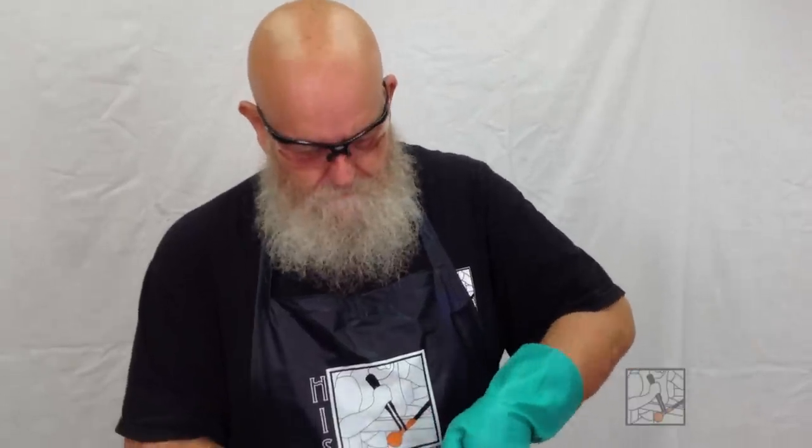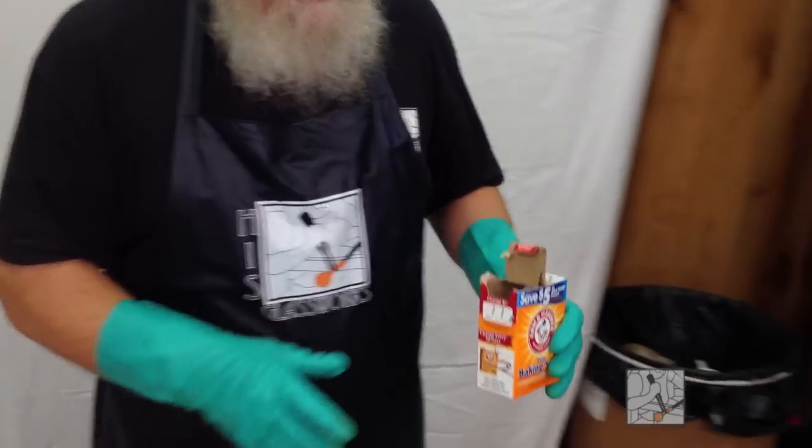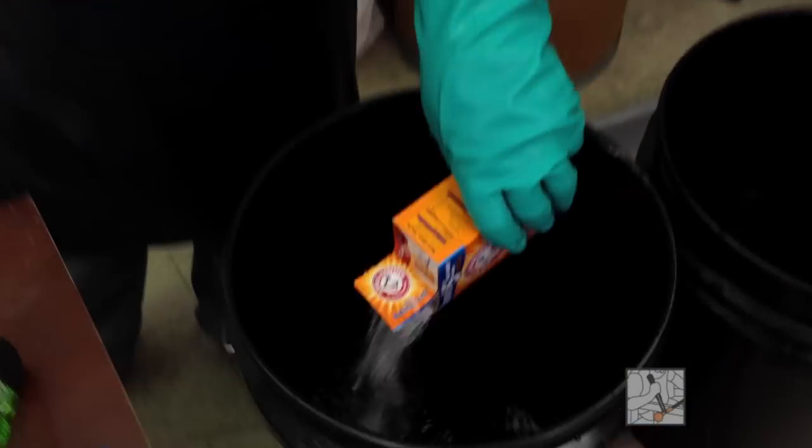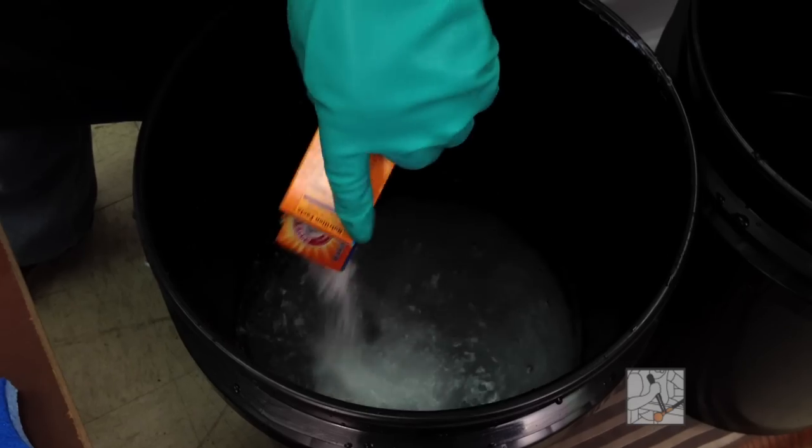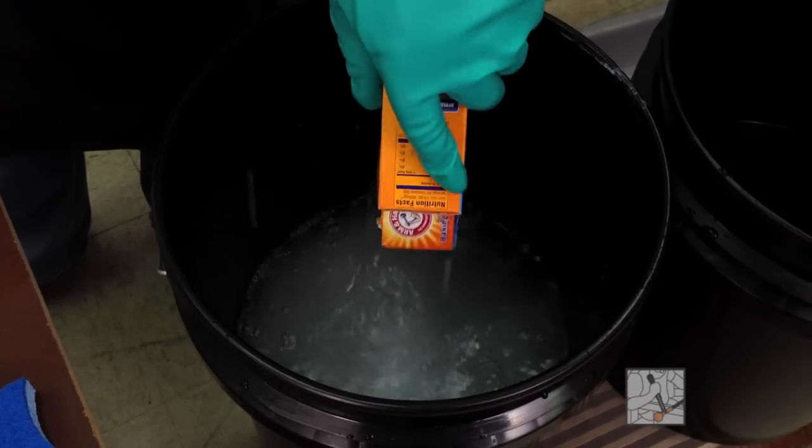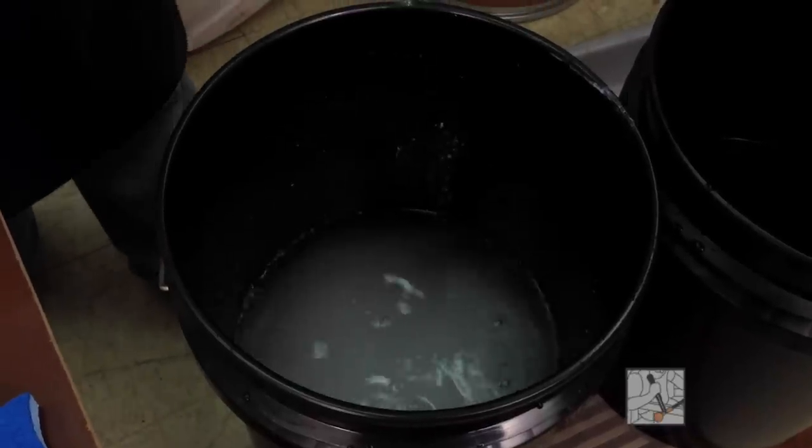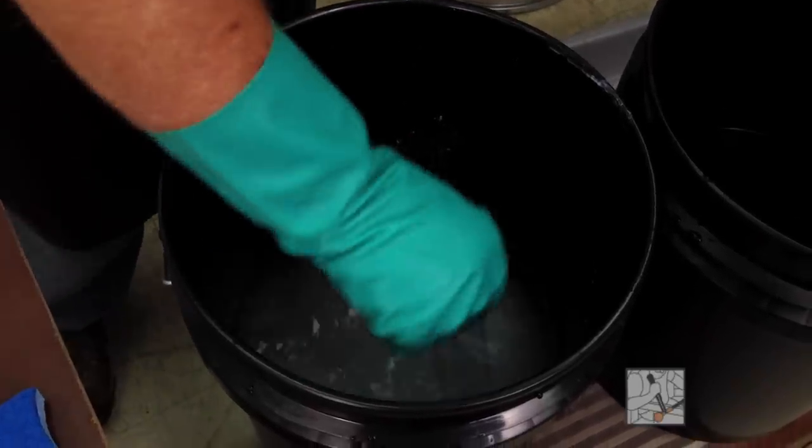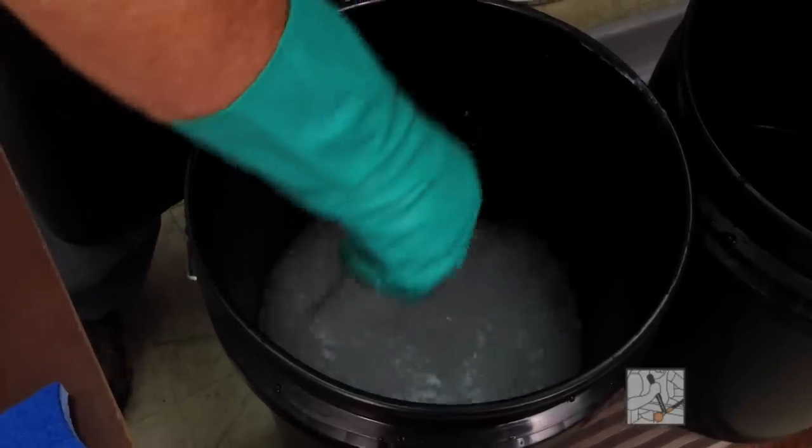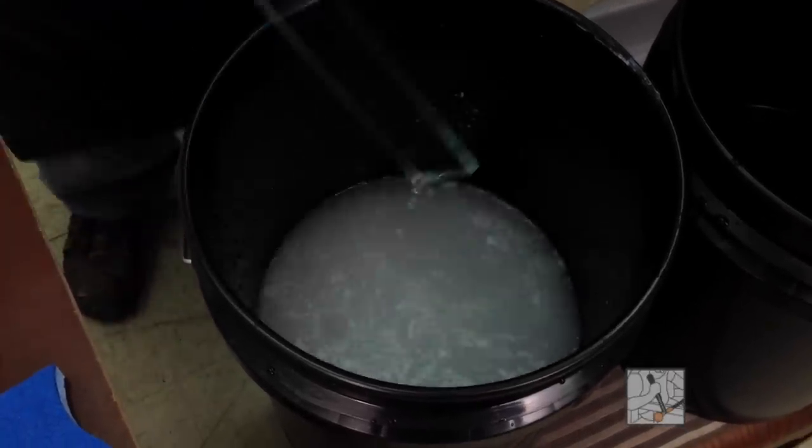The next step before you start any etching is preparing your rinse baths. One pound of baking soda, generic or Arm and Hammer. We do not sell this. Go to your local grocery store for it. I put this in my water, and approximately one pound of baking soda should neutralize one quart of the etching liquid. Give it a good stir. It's all right if it doesn't totally dissolve, it is in the liquid, and that's where it needs to be.